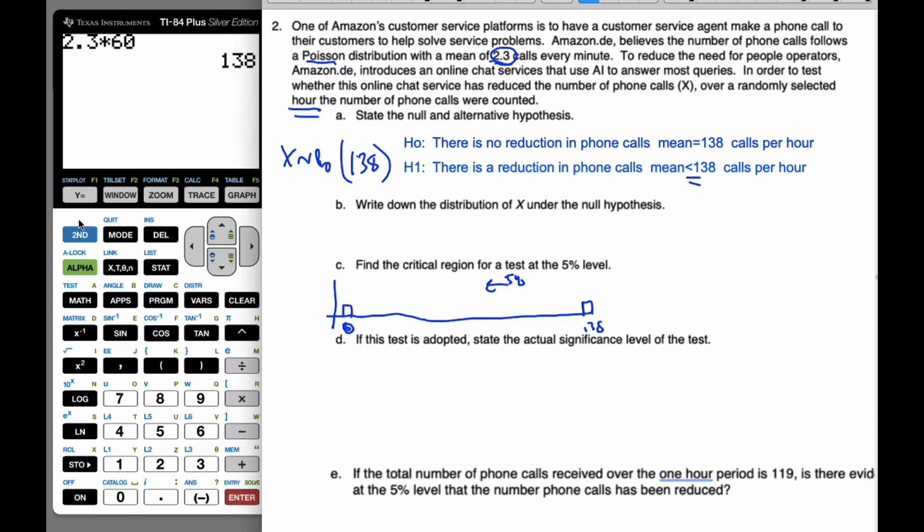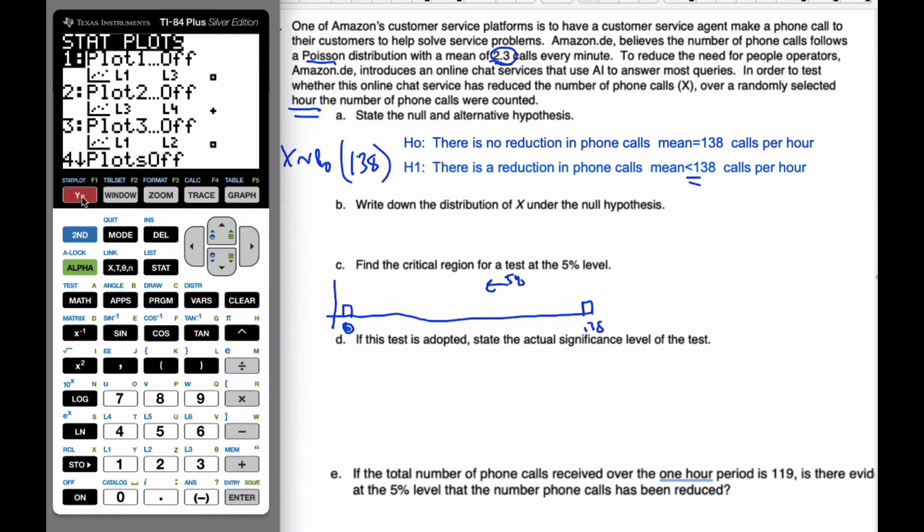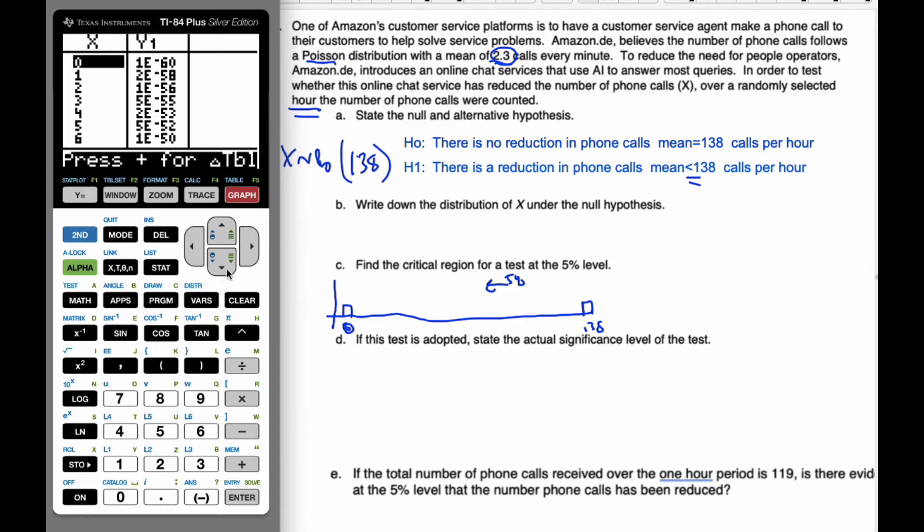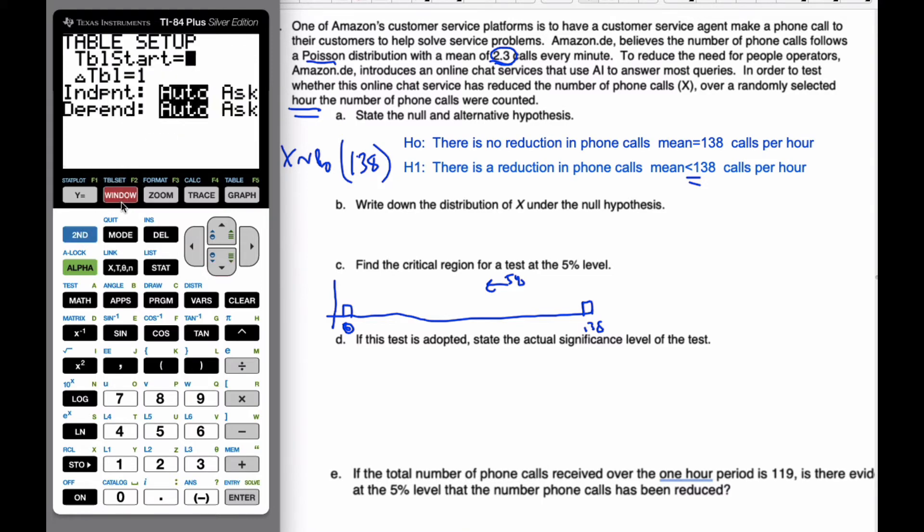So if I go to my calculator, I'm going to go to Y equals, and I've already put Poisson CDF into my calculator with 138 is by me and X. And if I go to my table, I can start at zero. And look, these values are really super duper small. Adding up, it will take me a long time to get all the way to 138. So if I go to my table set, which is above a window, if I go second table set, I'm going to start, let's go to 100.